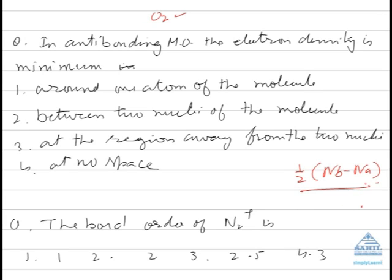Now the question is: in anti-bonding molecular orbital, the electron density is minimum. I have already told you, in the case of anti-bonding molecular orbital, the electrons lie away from the two nuclei.